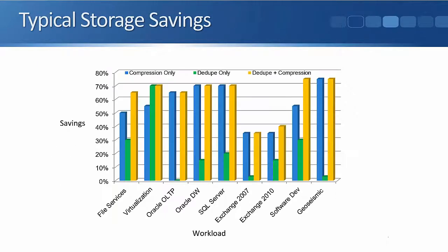If you enable both, compression will be completed before deduplication. The slide here is taken from the NetApp website — the bar in blue is compression only, green is deduplication only, and yellow is when you enable them both. For many workloads you'll typically get over 60% space savings. For example, in a VDI virtual desktop environment, all virtual machines run the same operating system with the same patches and applications installed, so there's a lot of duplicate data — you can get really good space savings from enabling both. The same applies to databases and file services.